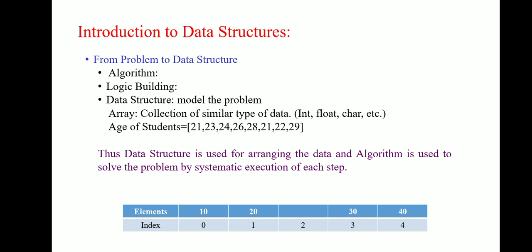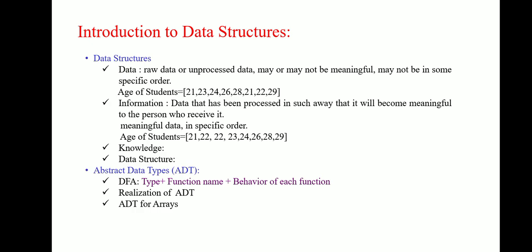Where data is nothing but raw data or unprocessed data. For example, age of the students which is taken as an array and this array consists of 21, 23, 24, 26, 28, 21, 22, and 29. Where information is data that has been processed in such a way that it will become meaningful to the person who received it. The information has structure and context.